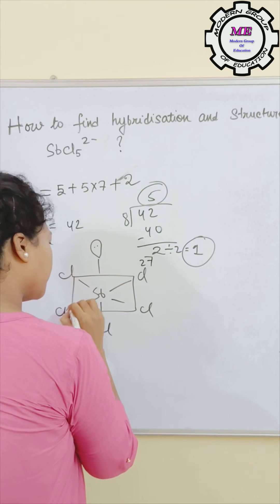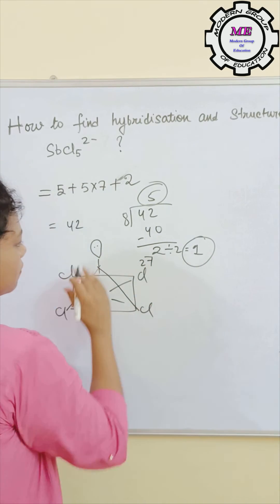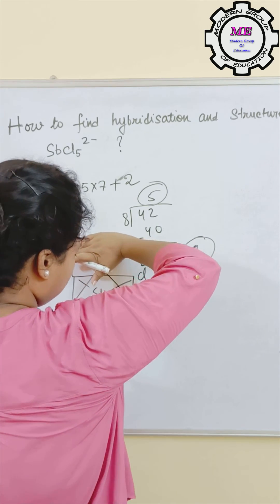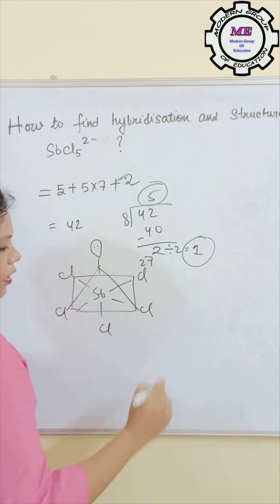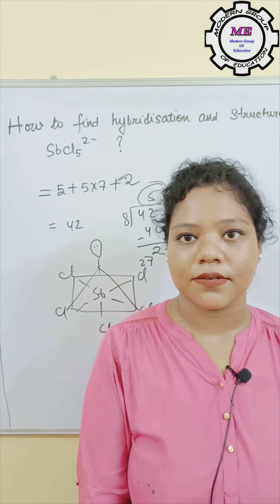So we know that if the lone pair is present, we have to erase the lone pair and then consider the structure. So this is the square pyramid structure. Hopefully you will find this useful.